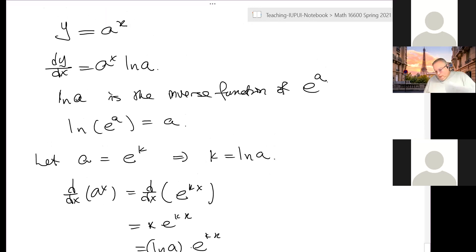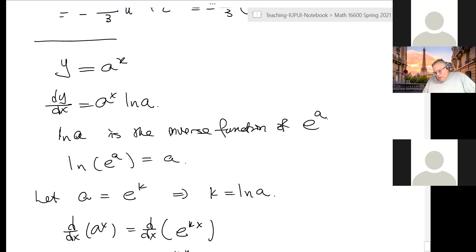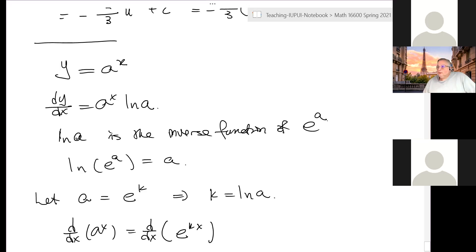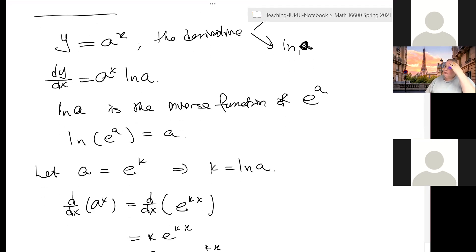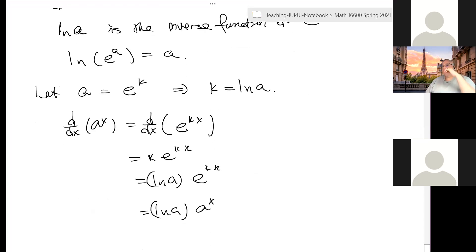Differentiating the exponential function leads to two things: the number e, and the function natural log of a. The natural log is the inverse function of e to the x. These are the formulas — we can go around and come back to the starting point. The natural log function is the inverse function expanded from e to the x.